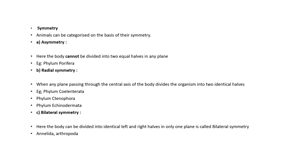Bilateral symmetry: the body can be divided into equal left and right halves along the median plane. Examples include Annelida, Arthropoda, and human beings — all showing bilateral symmetry.